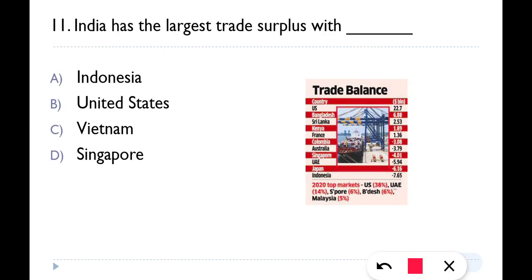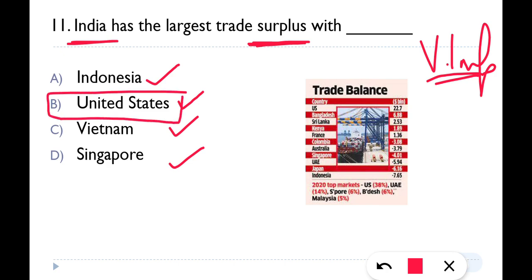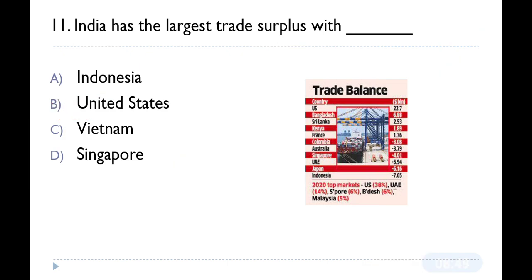Next is a very important question for your exam: India has the largest trade surplus with which country? Options are Indonesia, US, Vietnam, and Singapore. The correct answer is option B — United States. India has the largest trade surplus with the US.